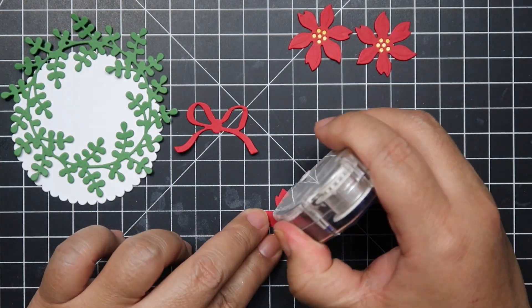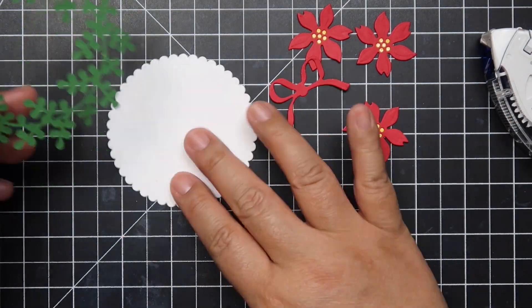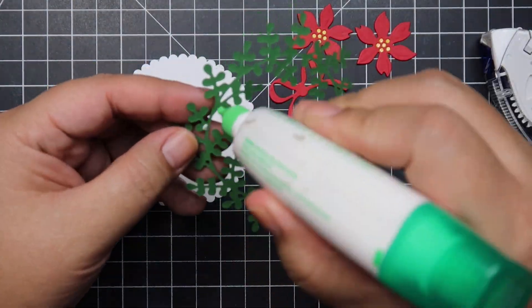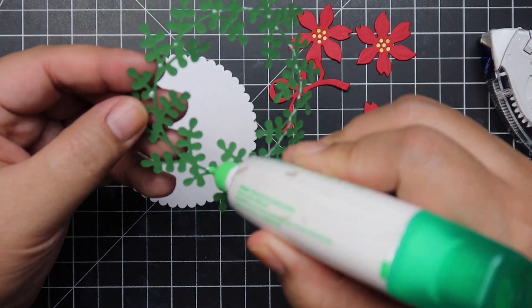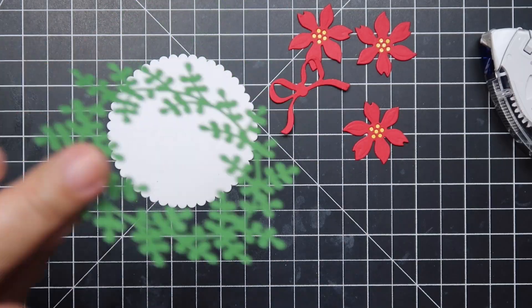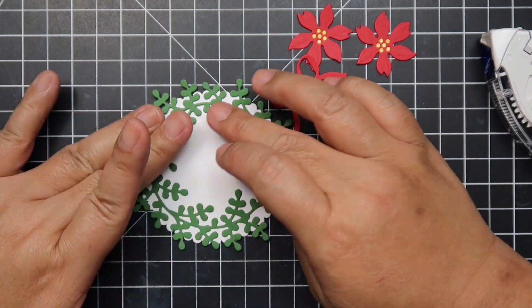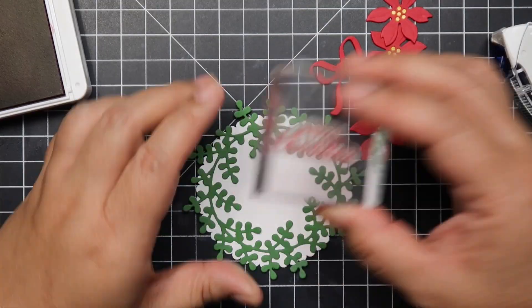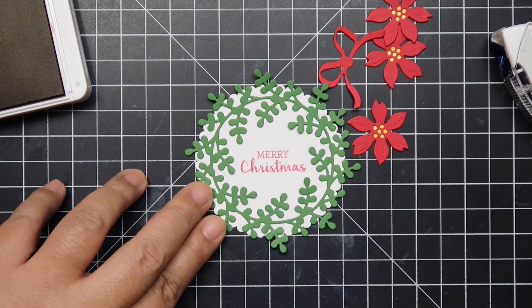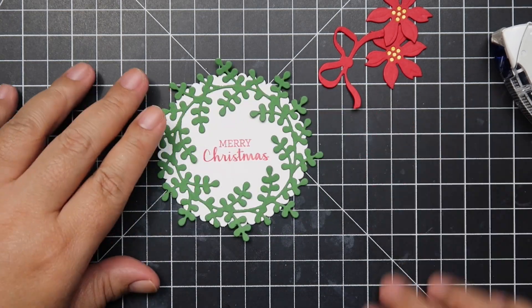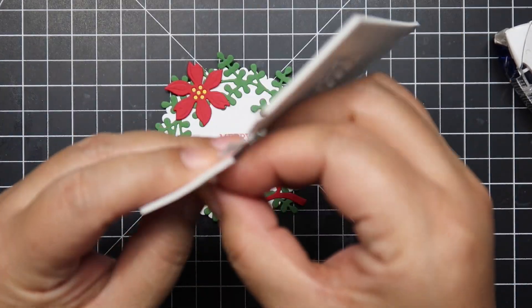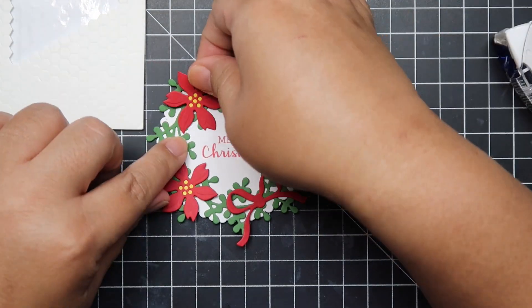Now the stamp set came with two wreaths with two different designs of leaves. Here's the first one. This leaf here reminds me of a Christmas wreath so that's why I chose it and I die cut all the wreaths with a Stampin' Up color called Garden Green.